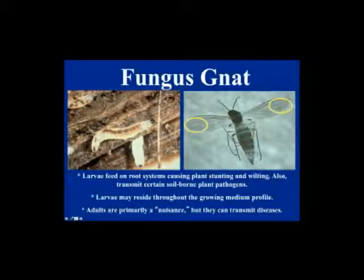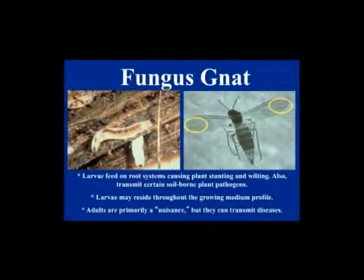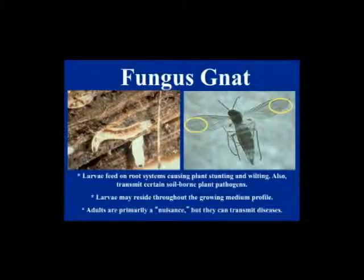Fungus gnats larvae have a black head capsule, which separates them from shore fly, and the adult stage has a Y-shape in the forewing. The larval stage is the one that causes all the damage because it chews the roots and also vectors diseases, whereas the adult is primarily a nuisance. Common symptoms of poinsettias being attacked by fungus gnats are stunting and wilting — even watering doesn't help; it actually makes it worse because moist conditions stimulate fungus gnat populations.